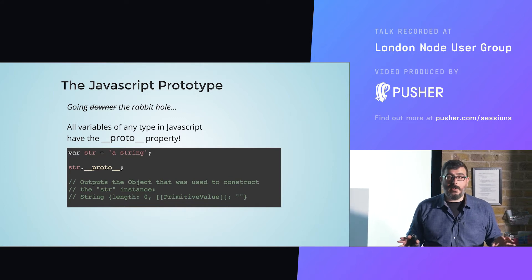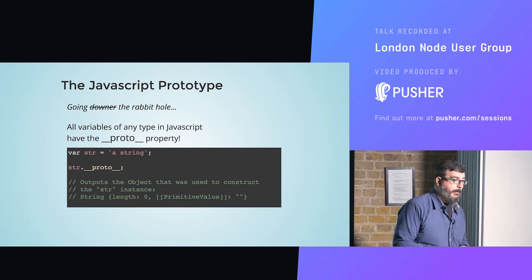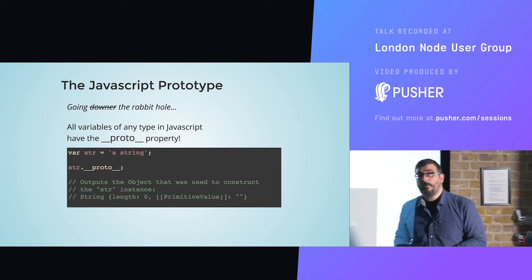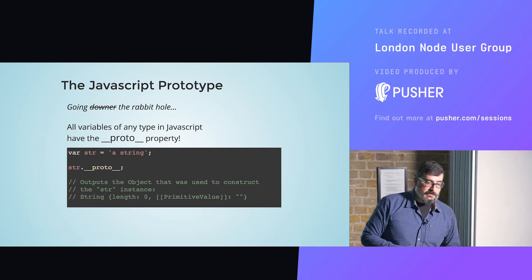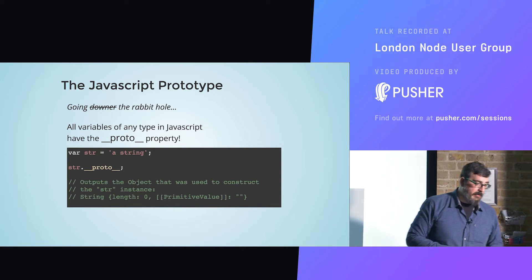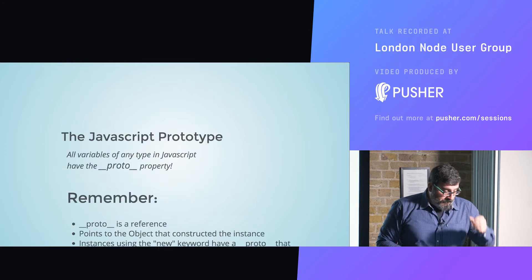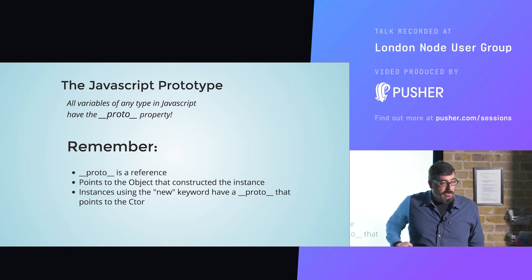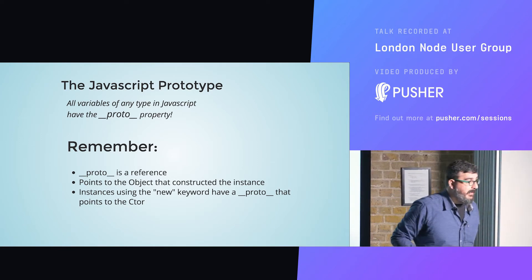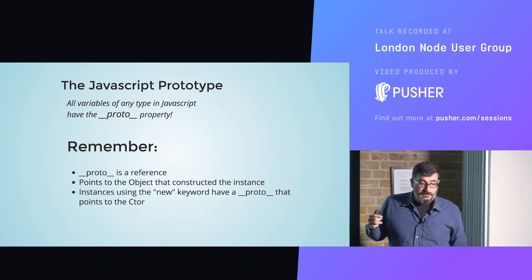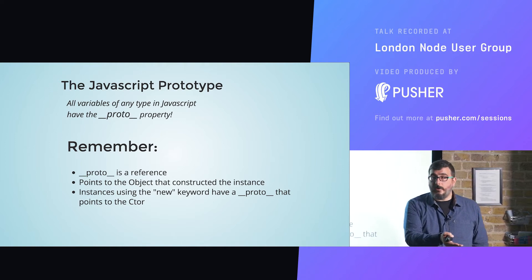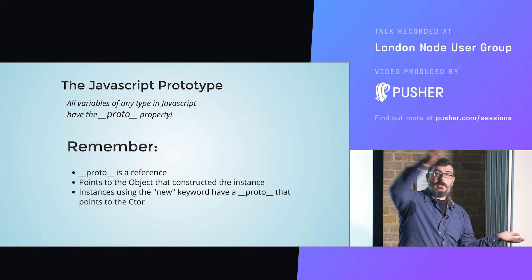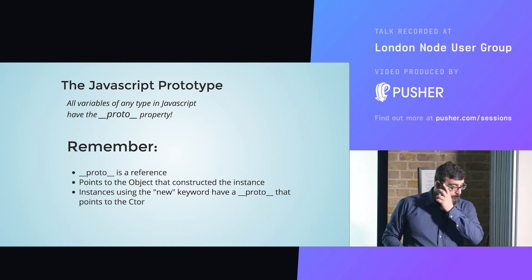Every variable in JavaScript has a __proto__ property, whose job is to point to the parent prototype — to the prototype that was used to create that instance, that property, that variable, everything. __proto__ is a reference that points to the object that constructed the instance. When you use the new keyword to instantiate a constructor, the __proto__ of that instance points back to the constructor. That's how this works.